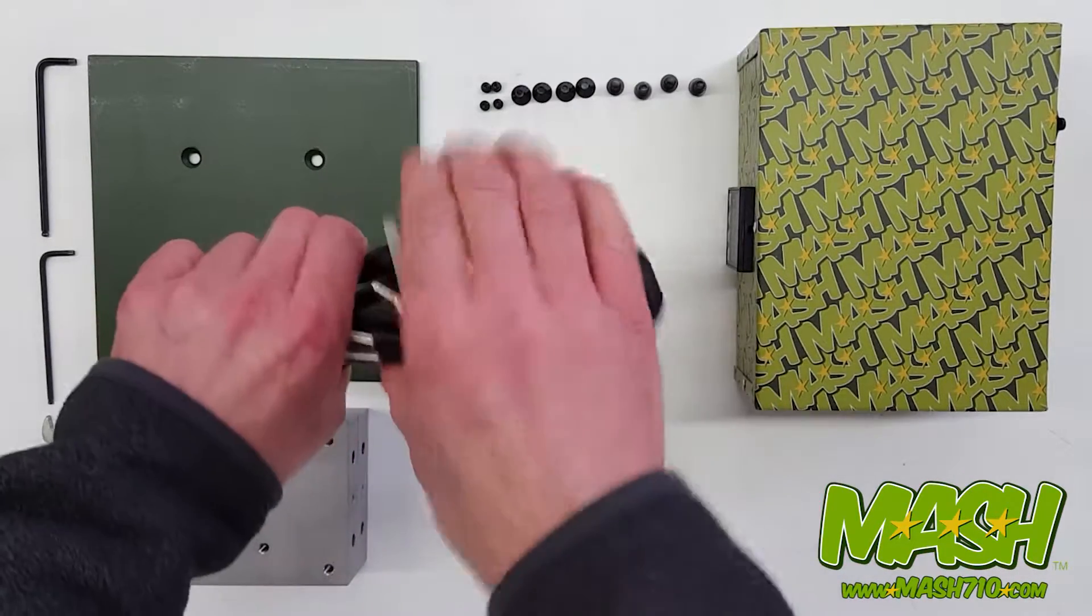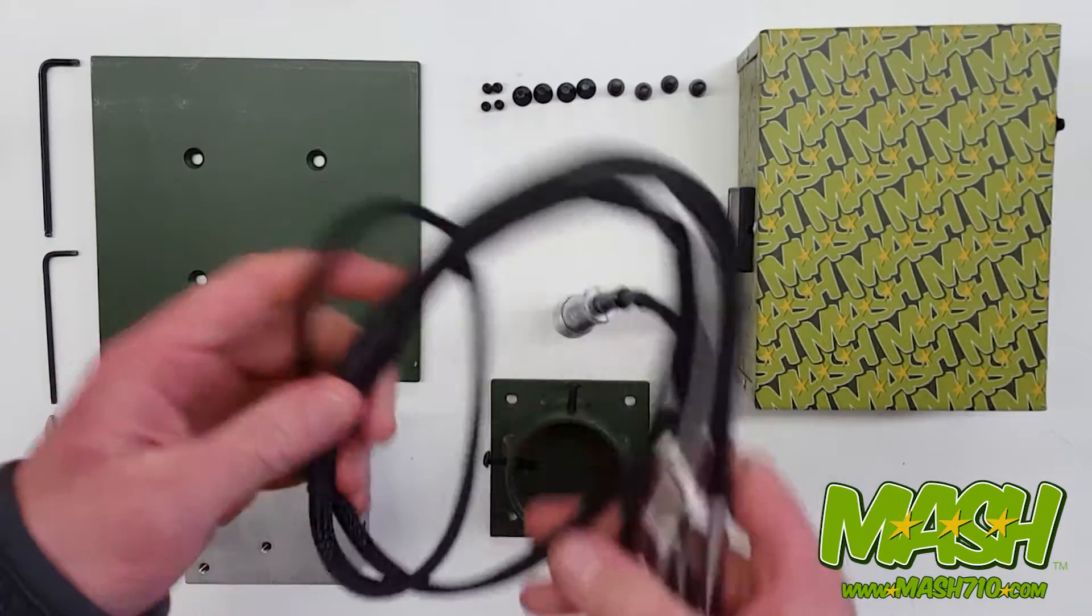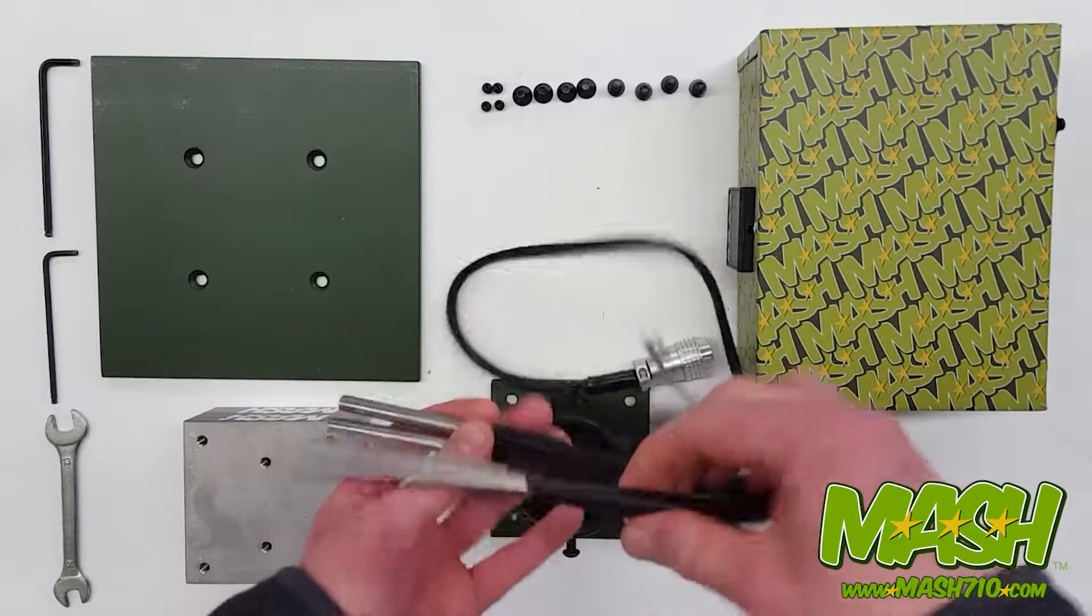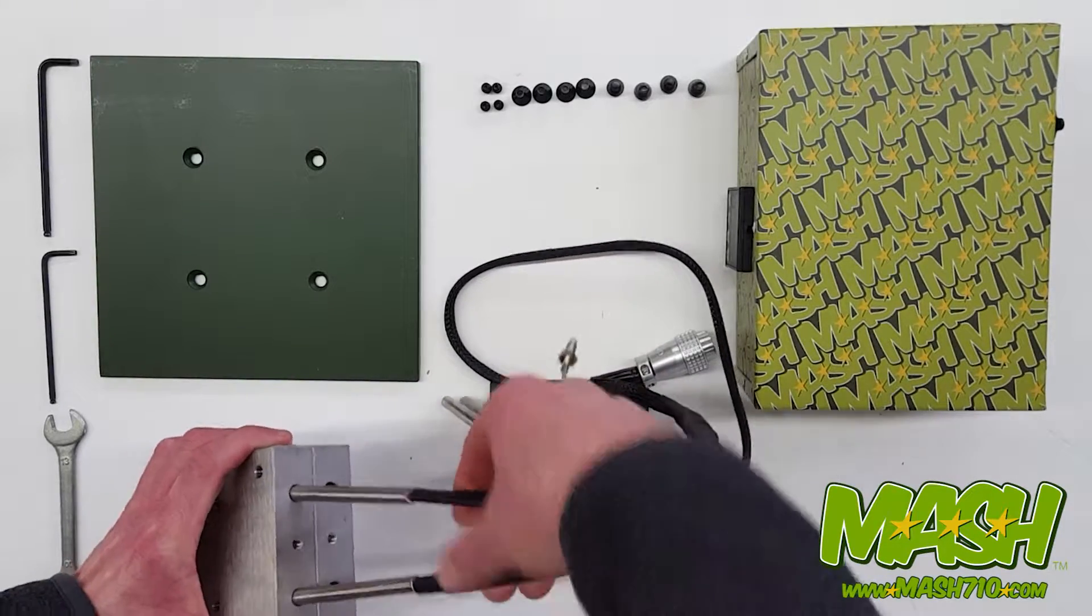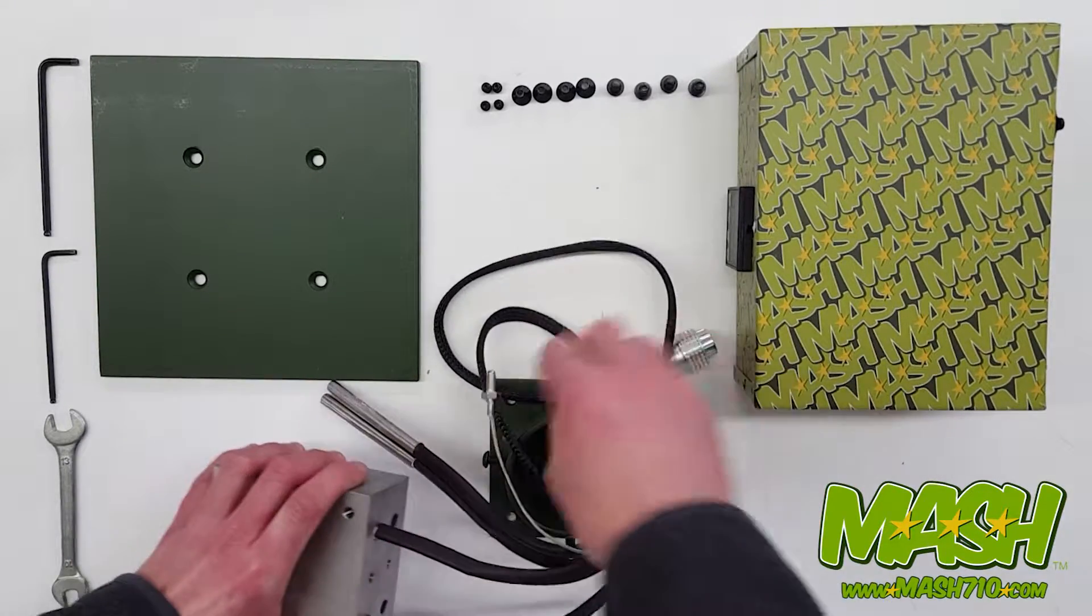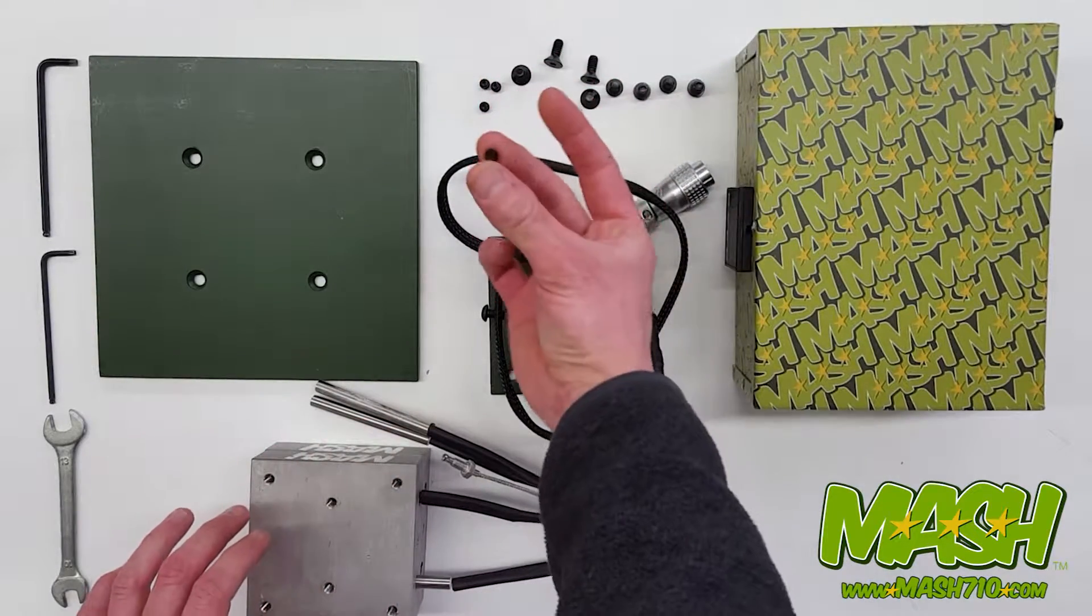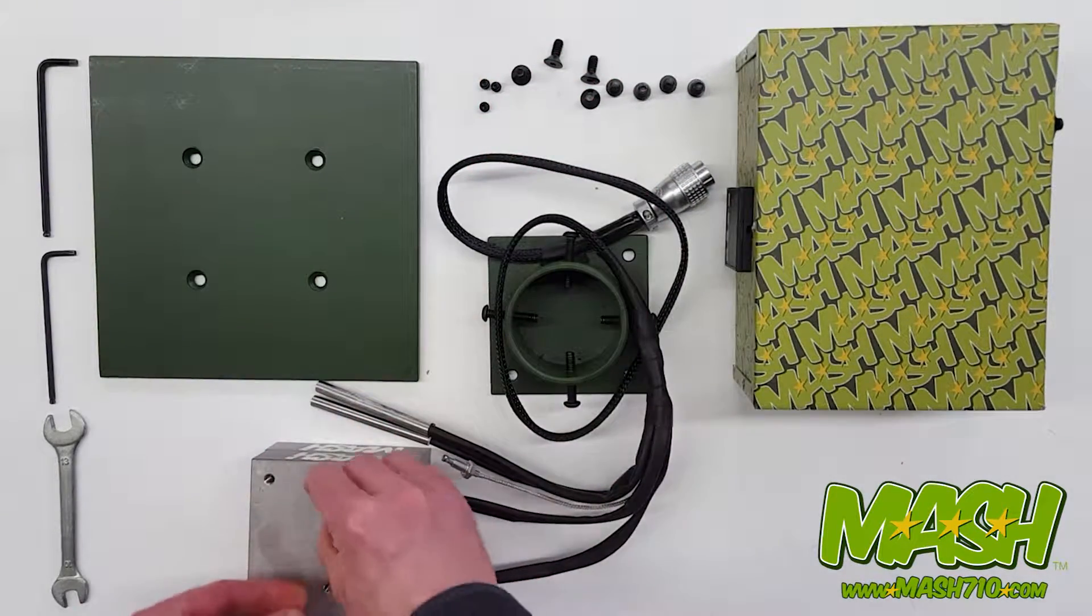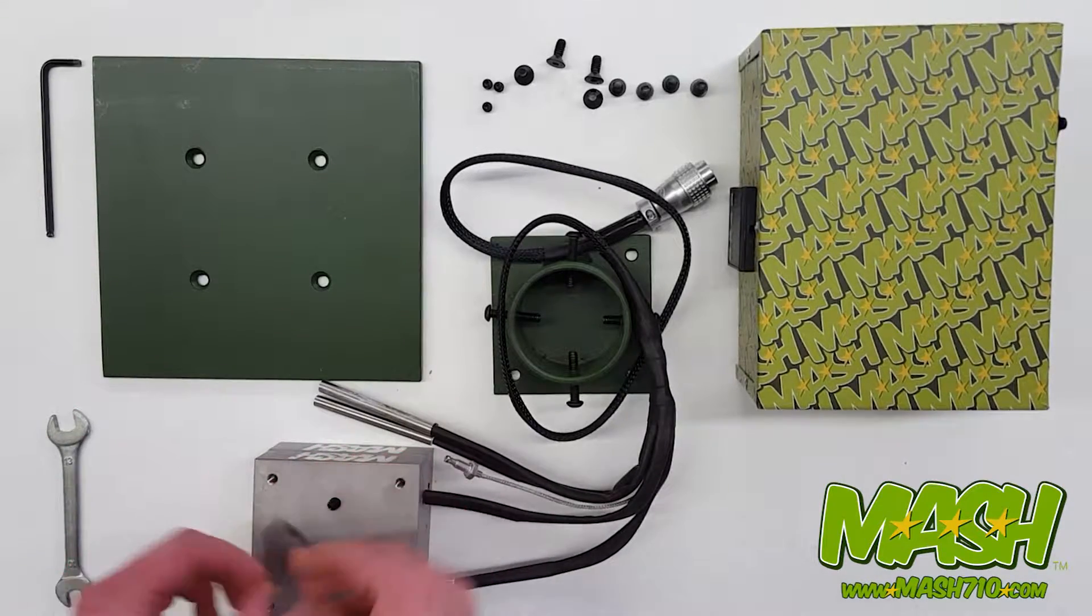Take your heater probes, making sure not to twist them all together. Insert the first two into the top plate using these tiny little set screws and a 1/8 inch hex wrench.